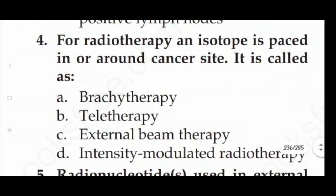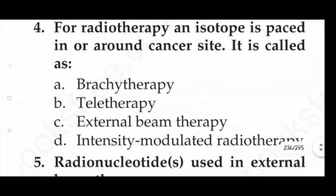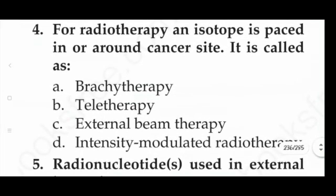Next question: for radiotherapy, an isotope is based in or around a cancer site — it is called as option A: brachytherapy, option B: teletherapy, option C: external beam therapy, option D: intensity modulating radiotherapy. The answer is brachytherapy, that is option A.